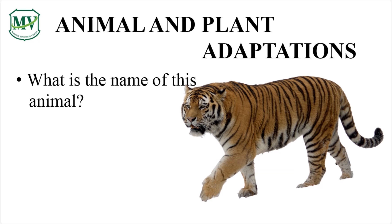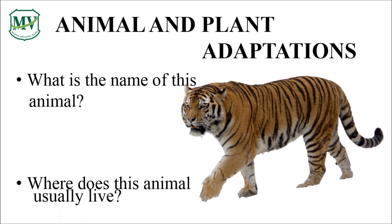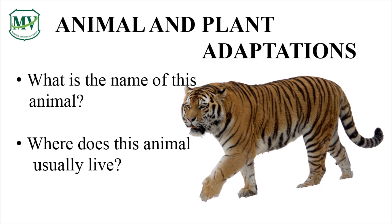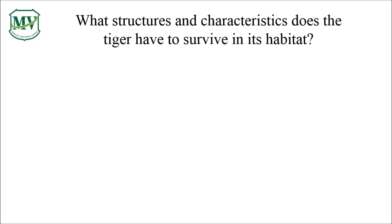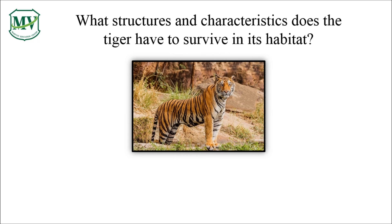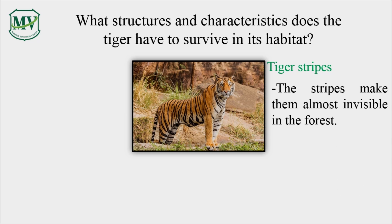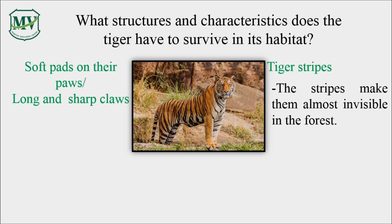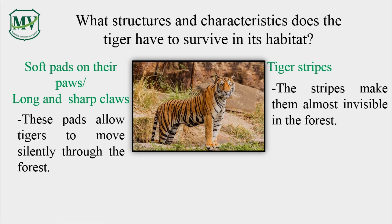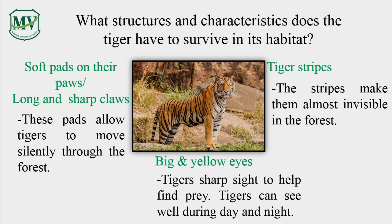Look at the picture above. What animal can you see and where do you think it usually lives? What structures and characteristics does the tiger have to survive in its habitat? The stripes make them almost invisible in the forest. The soft pads make them move silently in the forest. The long and sharp claws help them catch their prey and grasp it. Their big and sharp eyes help them see well even during the night. All these are the tiger's adaptations to the environment.